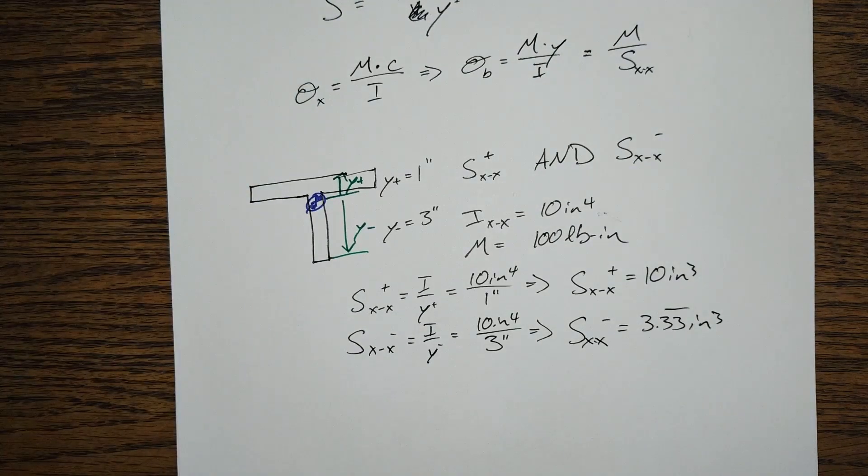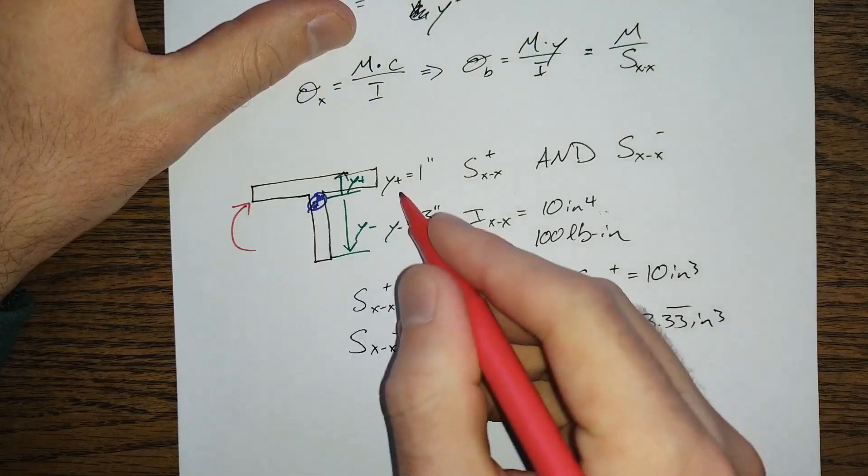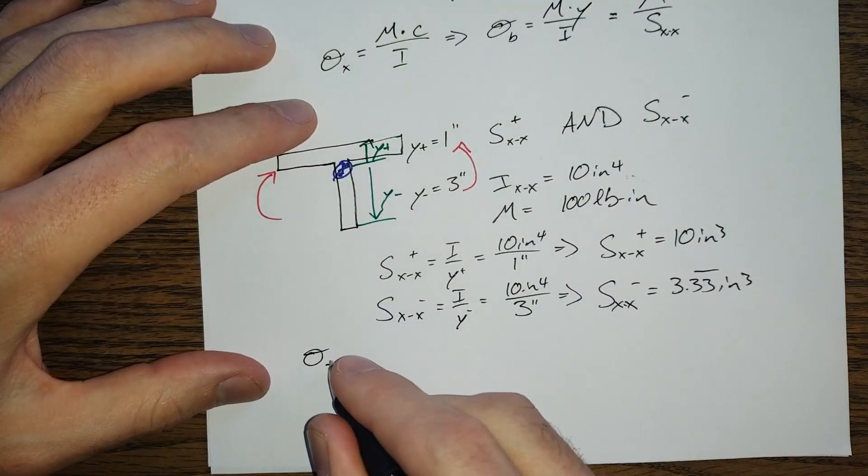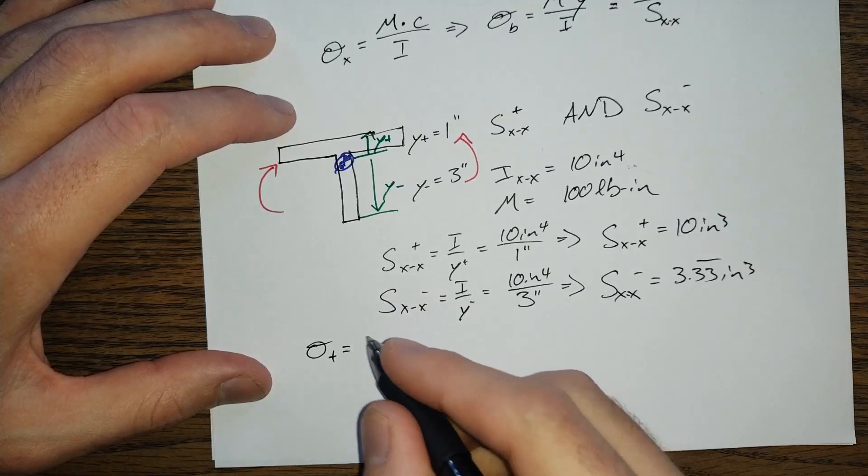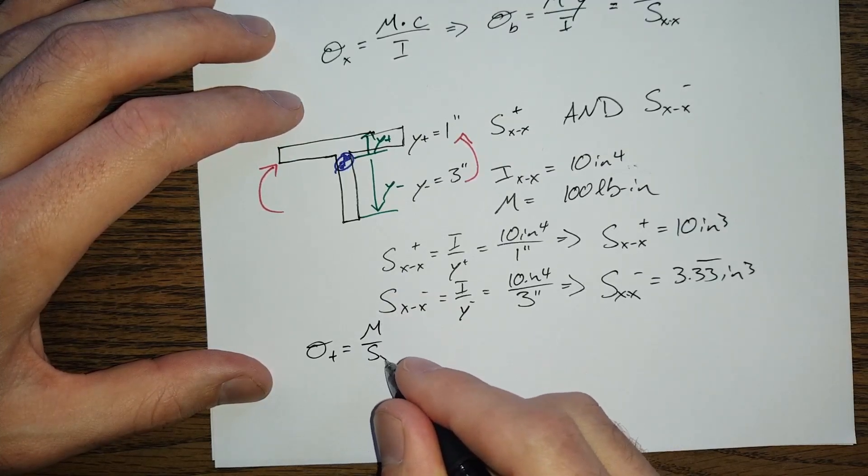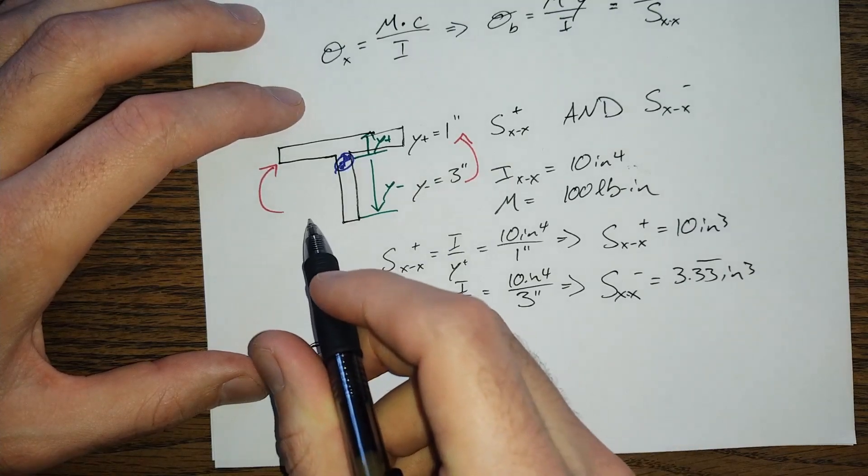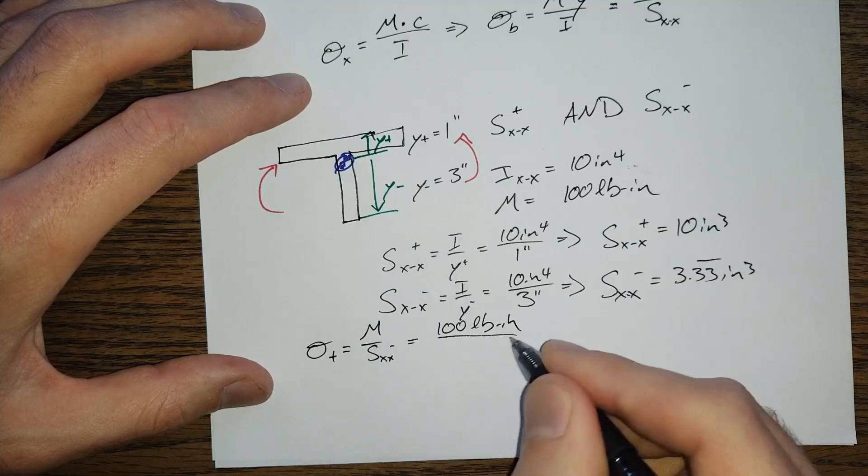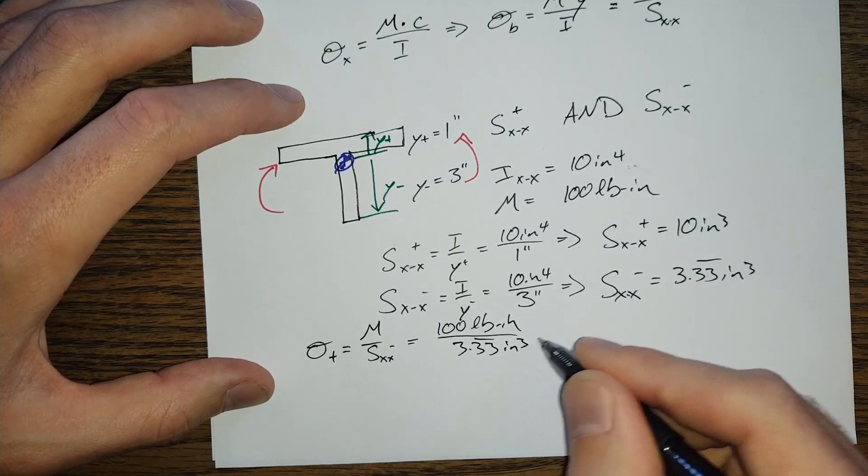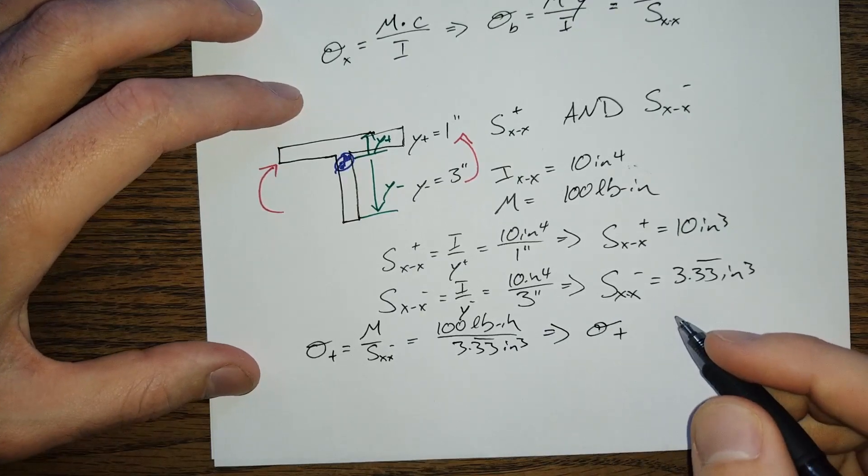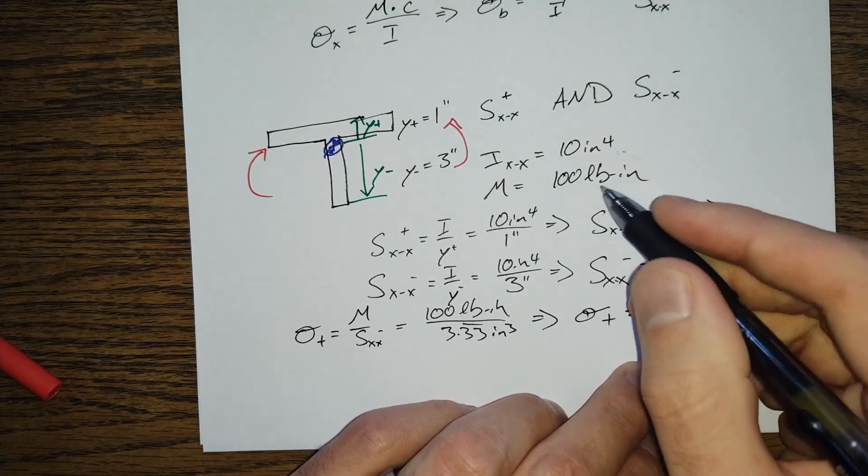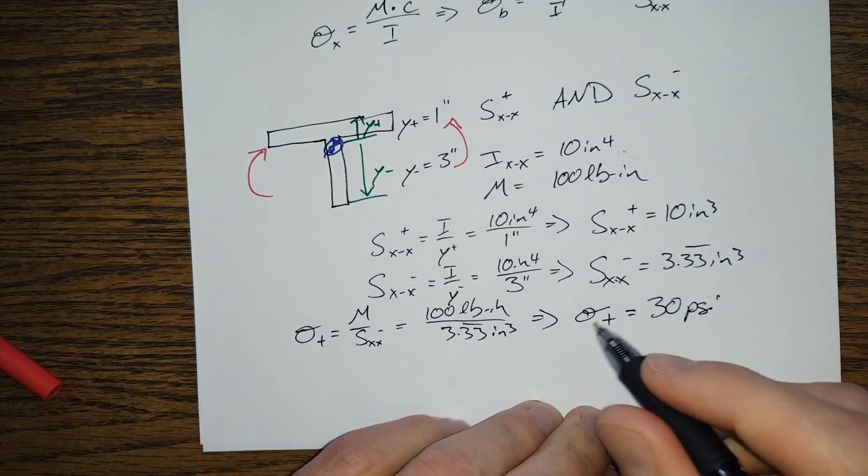And if our moment here, our applied moment, say, is like this, where we're putting the top in compression and the bottom in tension, then the maximum tensile stress that we're going to experience here is going to be M over SXX negative, because we're going down to that bottom end there. So, it's going to be 100 pound inches divided by 3.33 repeating, which is cubed. Maximum tensile stress is equal to 30 PSI, which is nothing, nothing at all.